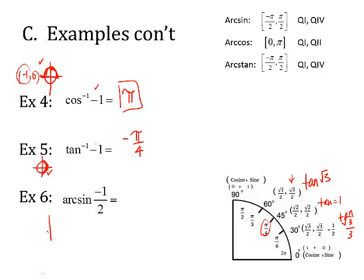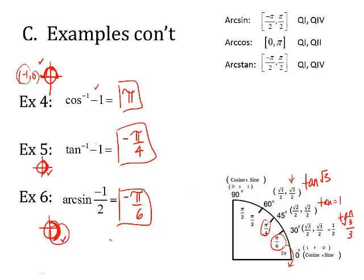Arc sine of negative 1 half: for arc sine, look in quadrants 1 and 4. It's negative, so I choose an angle down in quadrant 4 and use a reflected name. Looking at y values, the angle with a negative 1 half y value would be down at pi over 6 — but reflected down, that's negative pi over 6. That's how you evaluate inverse trig functions. Lots of problems to practice with today — ask if you have questions.